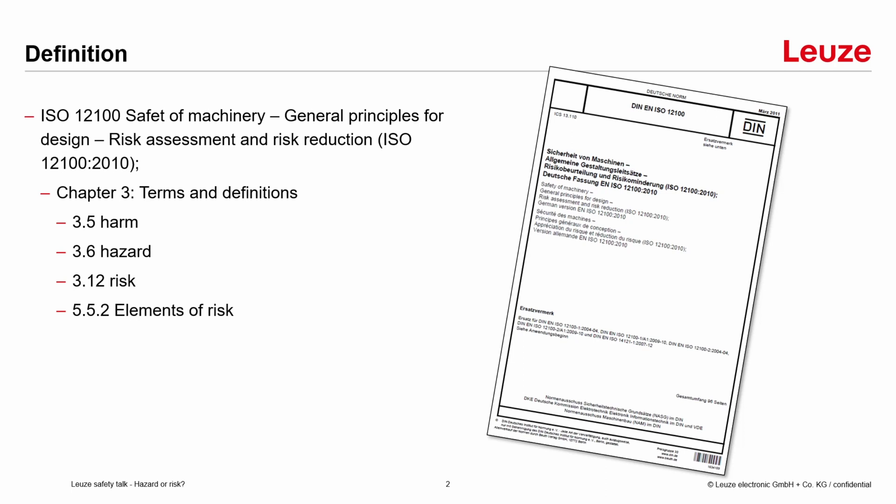In chapter 3 we find some definitions and terms, especially about the topic we are talking about today. We look into section 3.5, which is about harm; 3.6, which is about hazard; 3.12, which is about risk; and 5.52, which talks about the elements of risk.